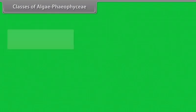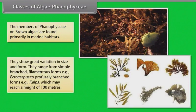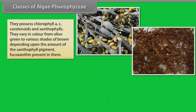The members of Phaeophyceae or brown algae are found primarily in marine habitats. They show great variation in size and form. They range from simple branched, filamentous forms, e.g. ectocarpus, to profusely branched forms, e.g. kelps, which may reach a height of 100 meters. They possess chlorophyll A, C, carotenoids and xanthophylls. They vary in color from olive green to various shades of brown depending upon the amount of xanthophyll pigment fucoxanthin present in them.